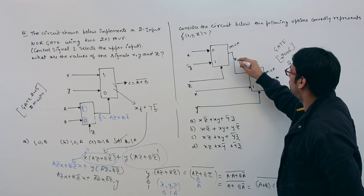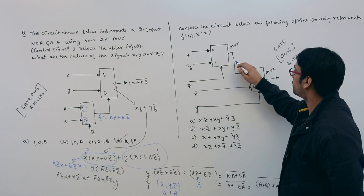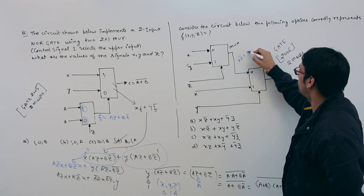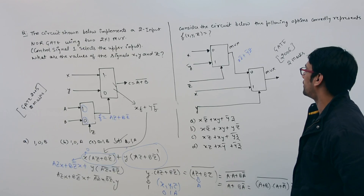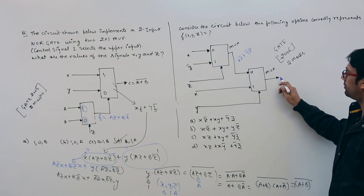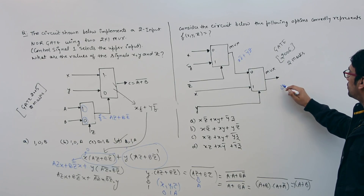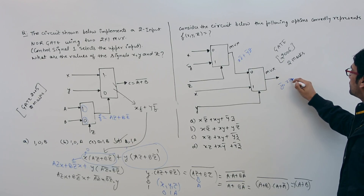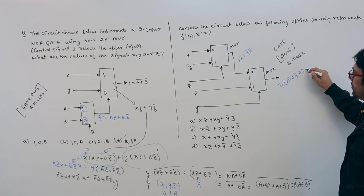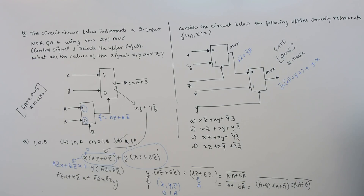This is a multiplexer. Assume this input represents 0 and this one represents 1. So the equation for the first MUX function will be X·Z complement plus Y complement·Z. This output is then given as an input to the second stage, so the final function represents Y complement·(X·Z complement + Y complement·Z) plus Y·X.